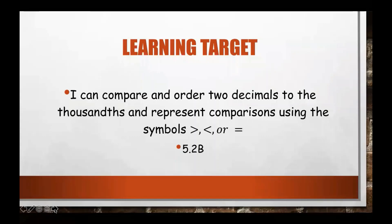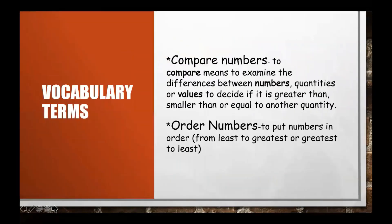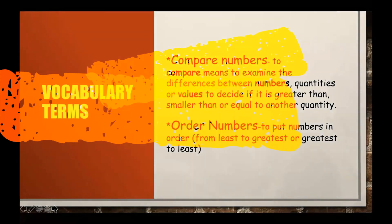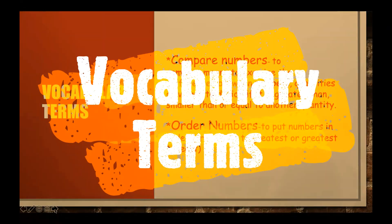Our learning target for today is: I can compare and order two decimals to the thousandths and represent comparisons using these symbols — greater than, less than, or equals. This is standard 5.2b. Our vocabulary terms for today are 'compare numbers' and 'order numbers.'